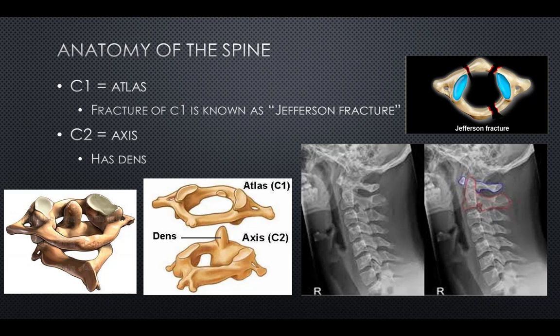A fracture of C1 is known as a Jefferson fracture — a bone fracture of the anterior and posterior arches of the C1 vertebrae, although it may also appear as a 3 or 2 part fracture. The fracture may result from an axial load on the back of the head or hyperextension of the neck, causing a posterior break possibly accompanied by a break in other parts of the cervical spine. It is named after British neurologist and neurosurgeon Sir Geoffrey Jefferson, who reported four cases of the fracture in 1920 in addition to reviewing previously reported cases.